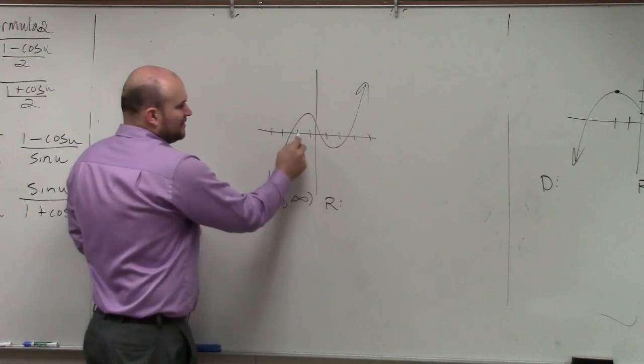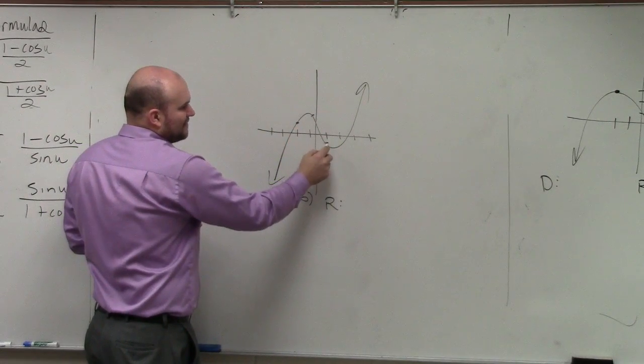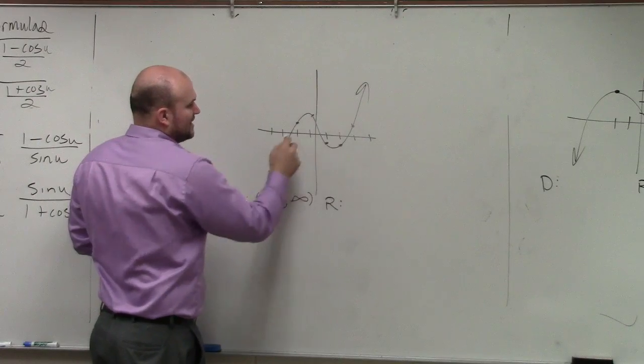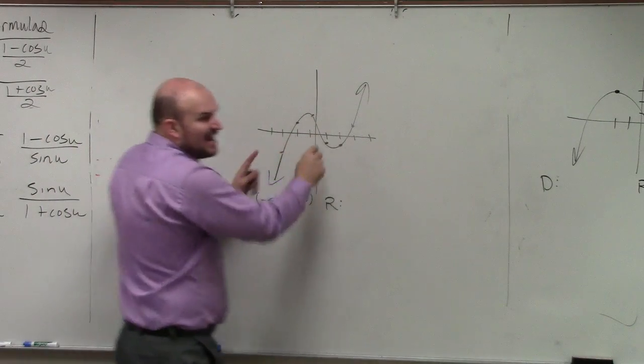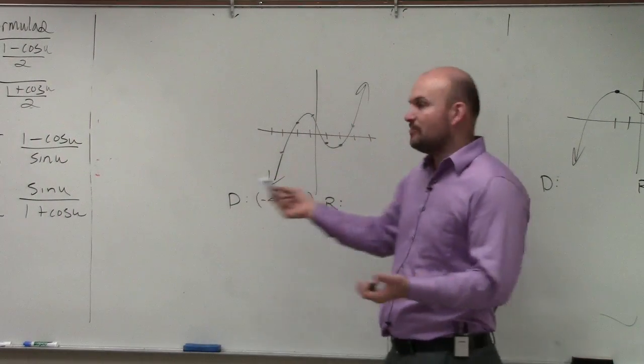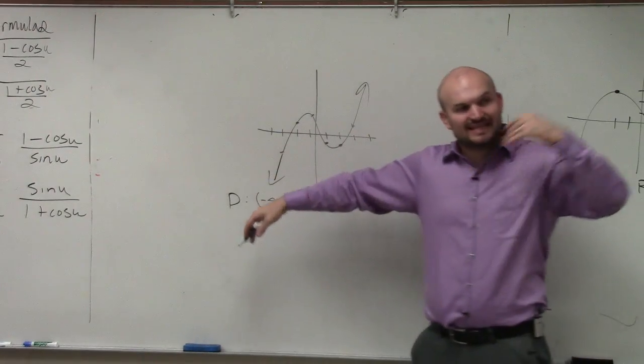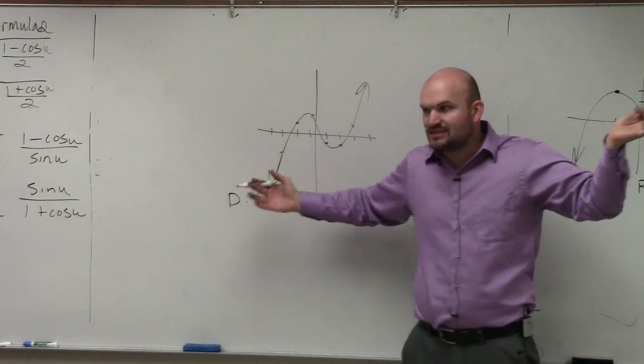Do you guys see it? All those values, there's a coordinate point on my graph. Do you guys see that? For every single x value that I can think of, there's a point. And as this graph keeps on extending, expanding, I'm always going to have values.